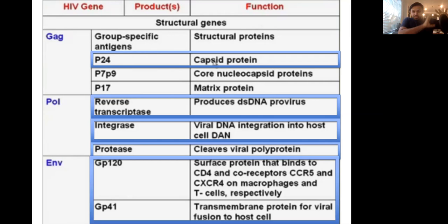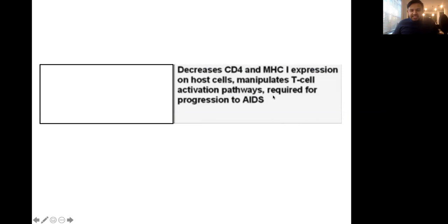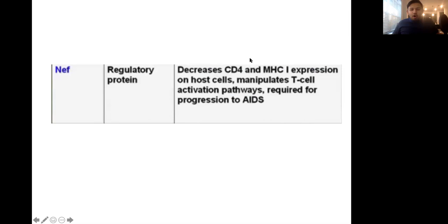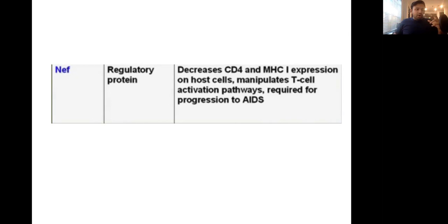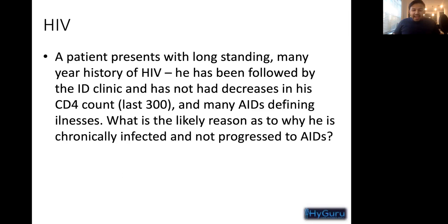You're trying to take details and put them back into the genes. Another key point: NEF manipulates T cells and is required for progression to AIDS. Remember that NEF also decreases MHC1 expression — and that's what tumor cells also do. Tumor cells, just like HIV, decrease MHC1, so antigens are not presented properly and the tumor or HIV can wreak havoc.